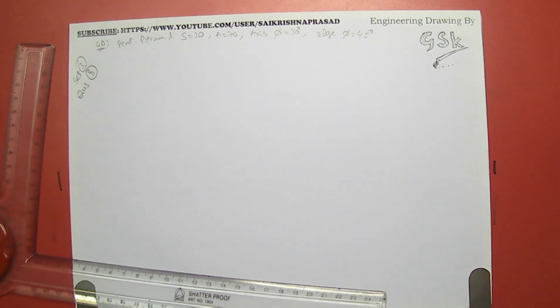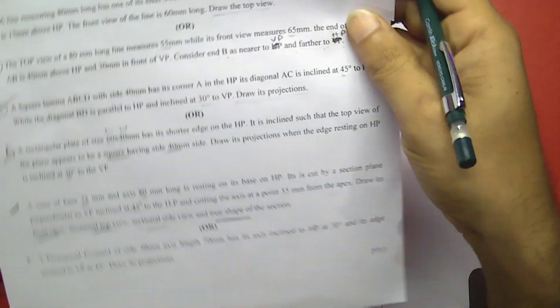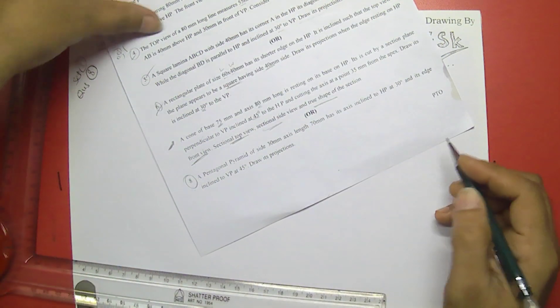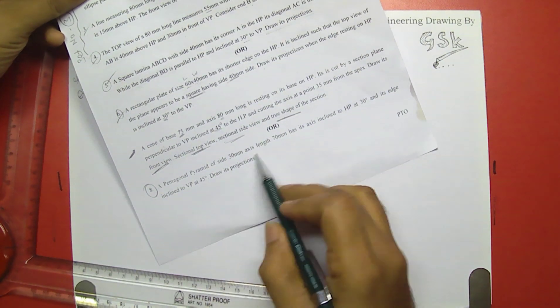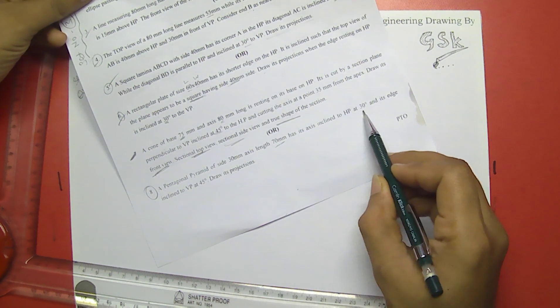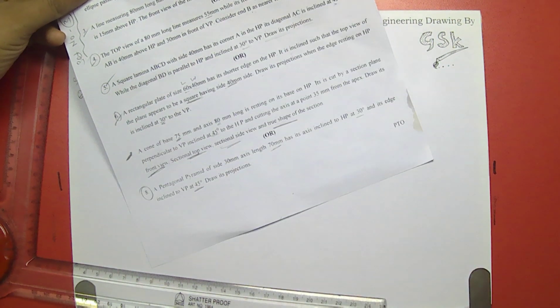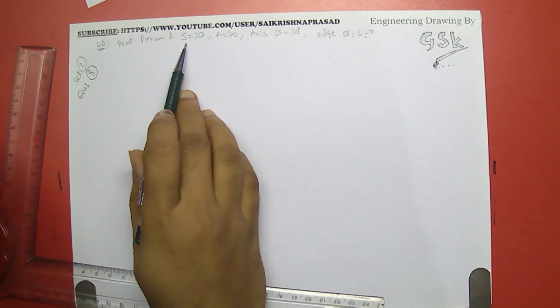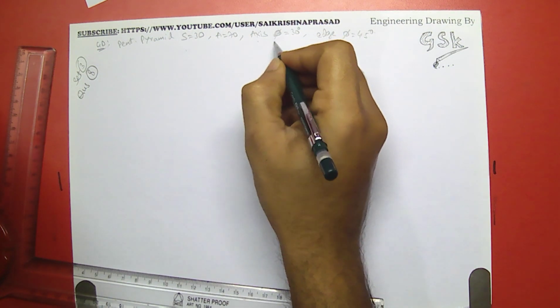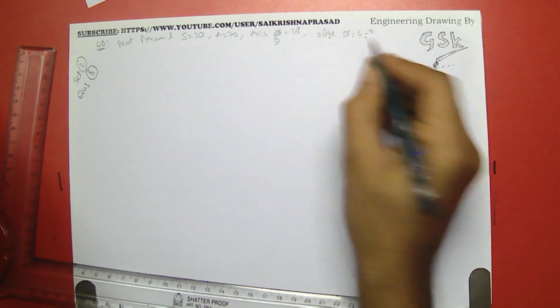Hello students, in this session we are going to discuss some of the questions given in the pre-final examination. We are going to discuss set 3, 8th question. A pentagonal pyramid of side 30 and axis 70 has its axis inclined at 30 degrees to HP and edge inclined at VP by 45 degrees. So theta is 30 degrees and phi is 45 degrees.